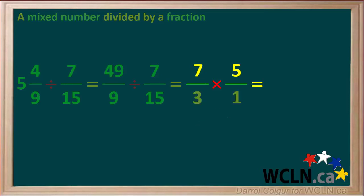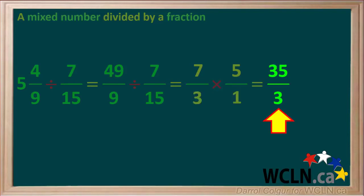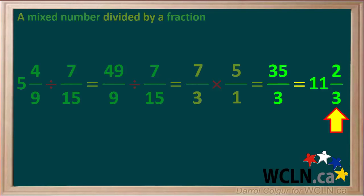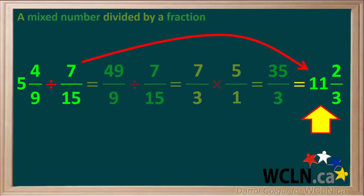Multiplying the numerators, 7 times 5 gives us 35. And multiplying the denominators, 3 times 1 gives us 3. So we're left with the improper fraction 35 over 3, which we convert to a mixed number. 3 goes into 35 eleven times; 3 times 11 is 33, so the remainder is 35 minus 33, which comes out to 2 thirds. The final answer for 5 and 4 ninths divided by 7 fifteenths is 11 and 2 thirds.